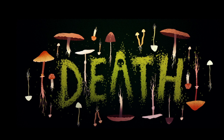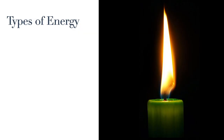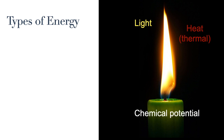So, since energy is obviously very important for life, let's explore energy a little bit further. We need to understand that energy exists in different forms. This candle, for example, is emitting energy as it burns. There is light and heat — two different forms of energy. But there's also chemical potential energy in the wax.